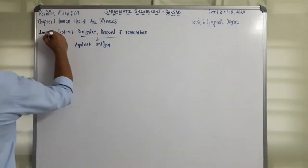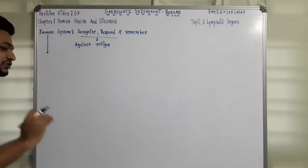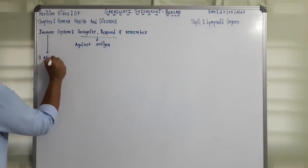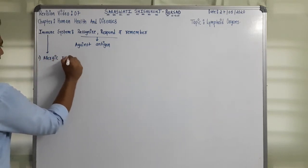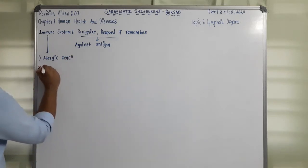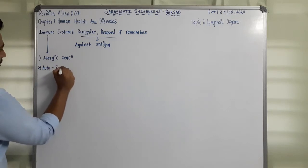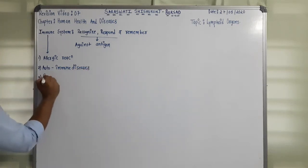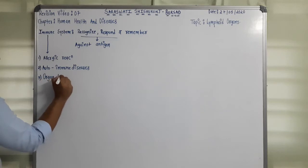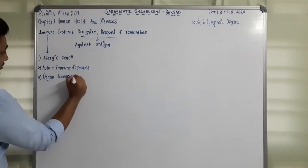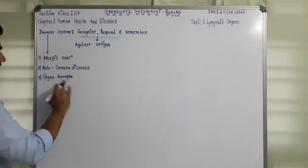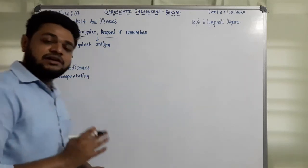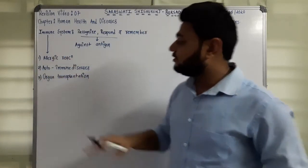The immune system is very important in three cases. First is allergic reactions. Second is autoimmune diseases. And the third one is organ transplantation. We have already discussed all three topics in detail where the immune system is playing a key role, but this is just an overview.